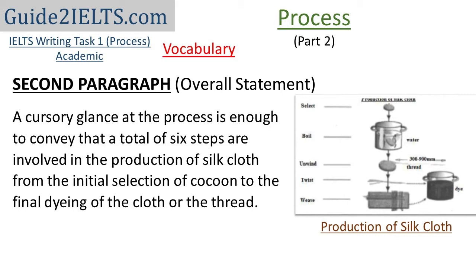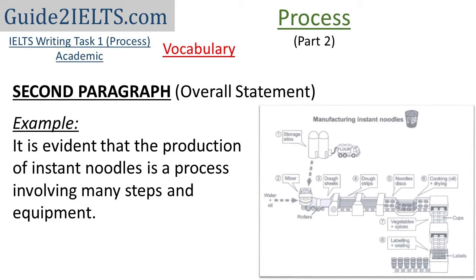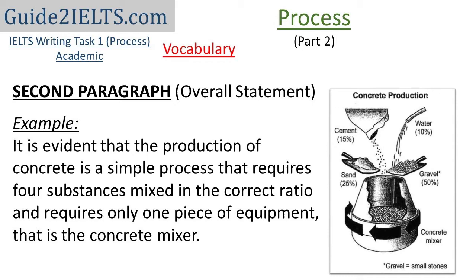Another way to write the overall statement would involve writing about the number of steps. You could just write 'many steps' if there are more than four or five, followed by the equipment, devices, or machines used. Example: 'It is evident that the production of instant noodles is a process involving many steps and equipment.' Or: 'It is evident that the production of concrete is a simple process that requires four substances mixed in the correct ratio and requires only one piece of equipment.'